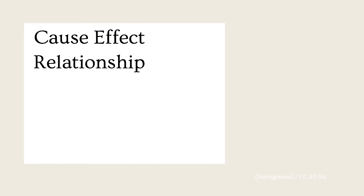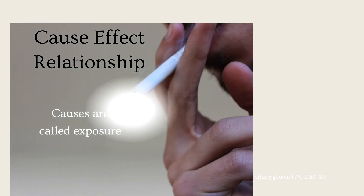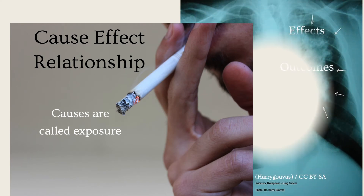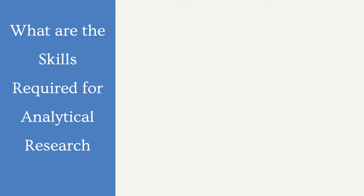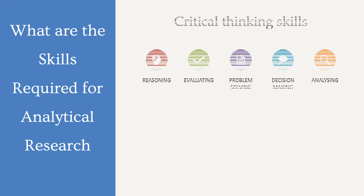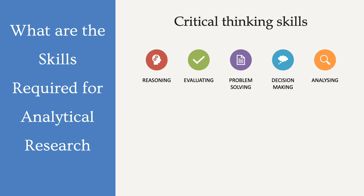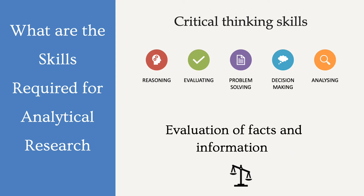What do you mean by cause-effect relationship? Let us see an example of smoking for the cause and effect relationship. Causes are called exposure, and effects are called outcomes.